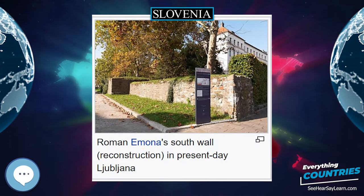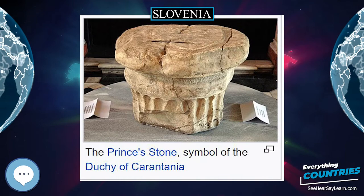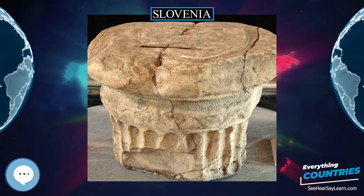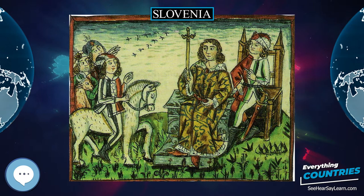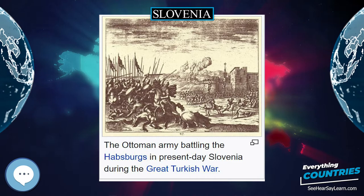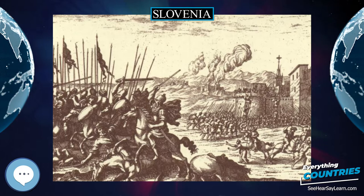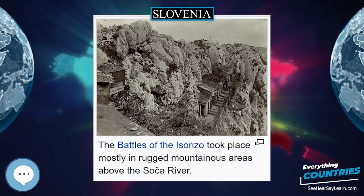Slovenia has historically been the crossroads of Slavic, Germanic, and Romance languages and cultures. Although the population is not homogeneous, Slovenes comprise the majority. The South Slavic language Slovene is the official language throughout the country. Slovenia is a largely secularized country, but Catholicism and Lutheranism have significantly influenced its culture and identity. The economy of Slovenia is small, open, and export-oriented, and is thus strongly influenced by the conditions of its exporting partners' economies. It has been severely hurt by the eurozone crisis which started in 2009.